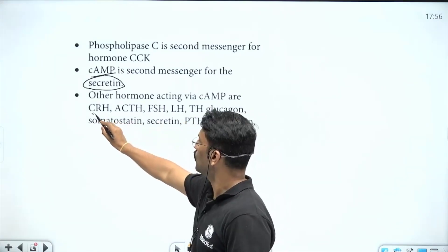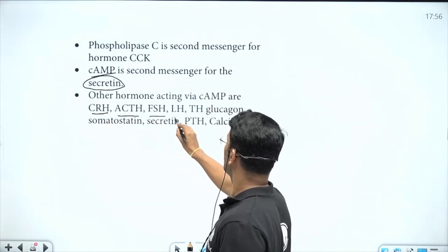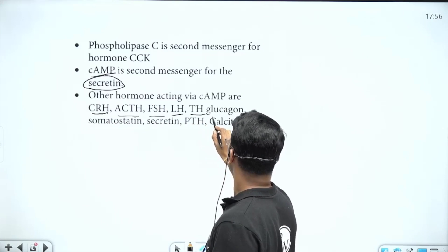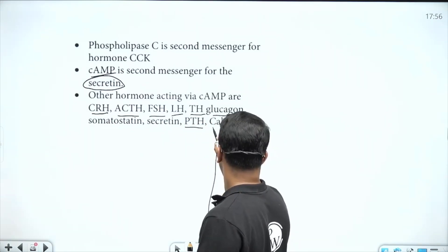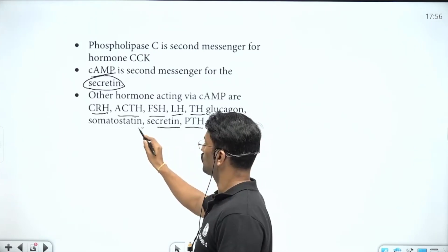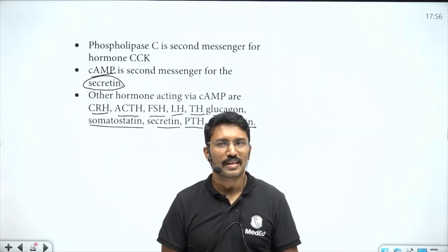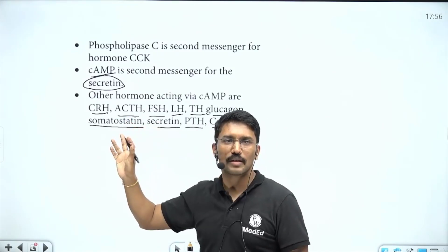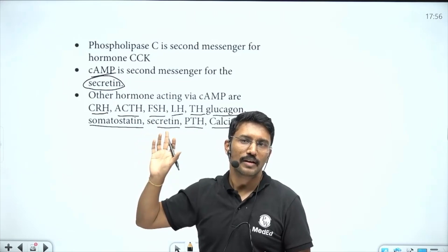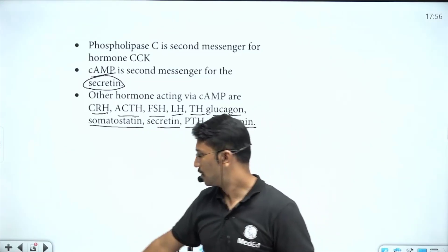All these hormones - corticotropin releasing hormone, ACTH, FSH, LH, TH, glucagon, parathormone, calcitonin, secretin, somatostatin - all of them are using cyclic AMP as their second messenger system, and that also means that all of these have G protein-coupled receptors.